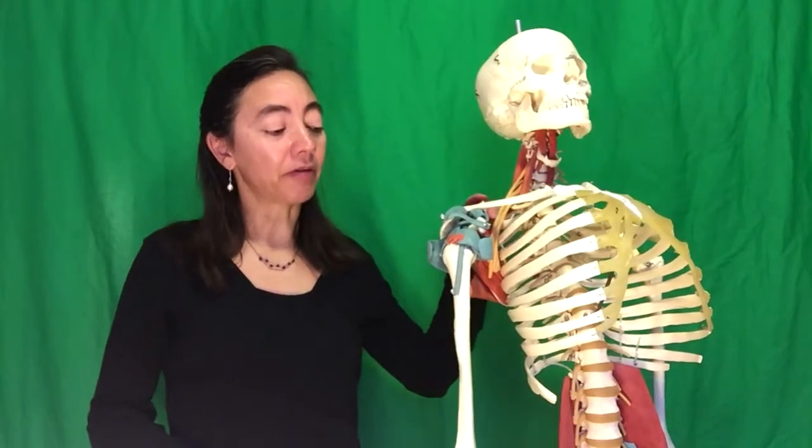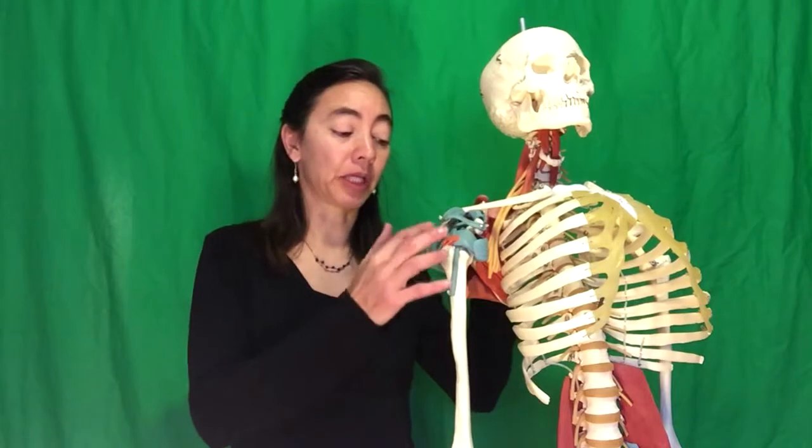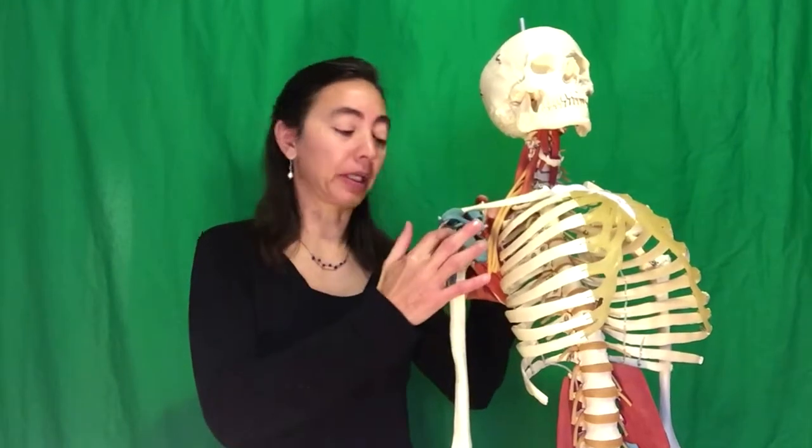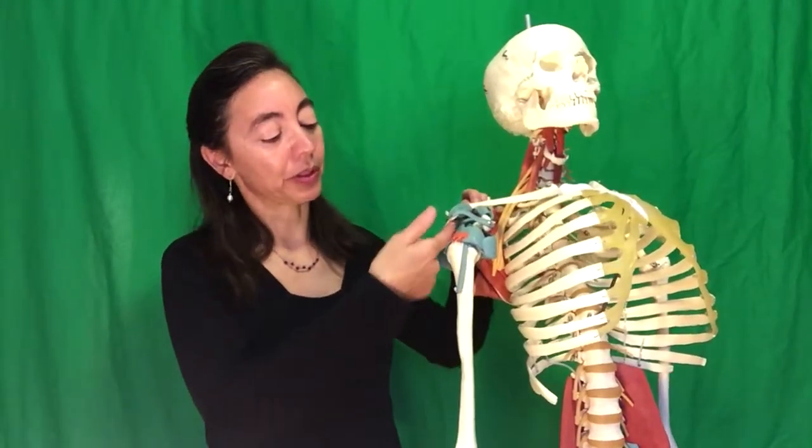The rotator cuff, when it gets injured, the most common muscle that is injured in the muscle tendon complex is the supraspinatus, and that's because it comes under this bone.